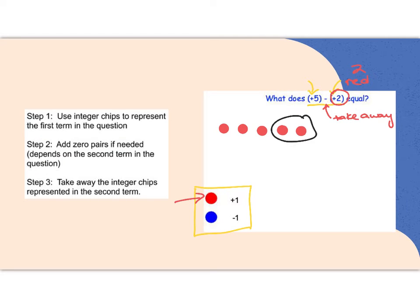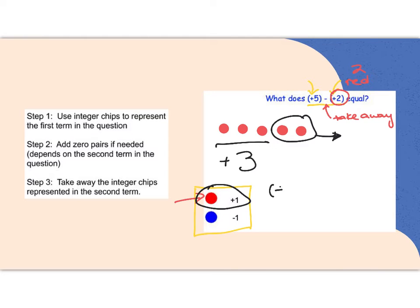So I'm going to grab these 2 red chips and remove them — circle them, use an arrow to show them drawing away — and that leaves you with a final answer of 3 red chips. Red is positive, so this is a positive 3. Final answer: positive 5 take away positive 2 equals positive 3.